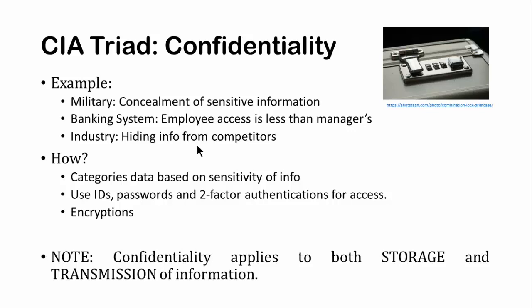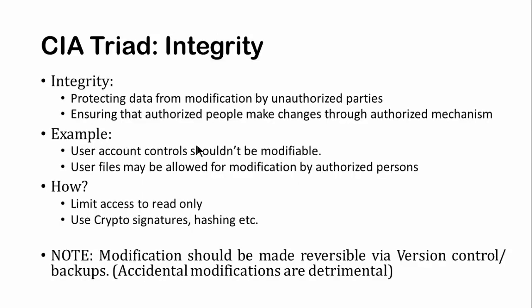Data integrity means protecting data from modification by unauthorized parties. However, even if you are authorized to modify it, you cannot modify it randomly and leave the system in an inconsistent state - there must be an authorized mechanism through which changes are made. For example, user account controls should not be modifiable by others, because if someone has that right and is not happy with a user, they could change that user's rights, making the user unable to do anything at all - which could be detrimental. Certain information should not be modifiable at all; you can make things read-only.